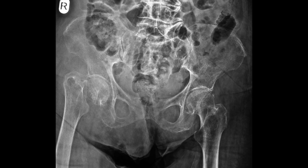Looking at this case, we have a complete fracture with displacement — this is a Type 4 Garden fracture. Moving to Type 3, the difference is that the degree of displacement is not total. So it's a complete fracture but it wouldn't be totally displaced like we're seeing here; the alignment would be a little more anatomical.